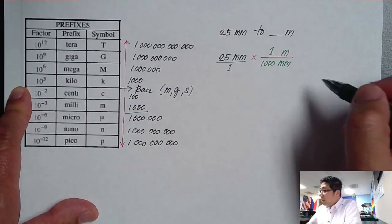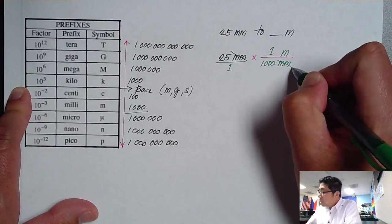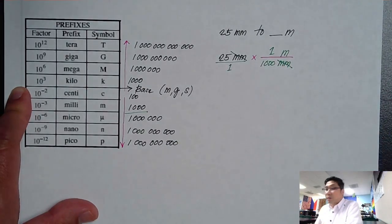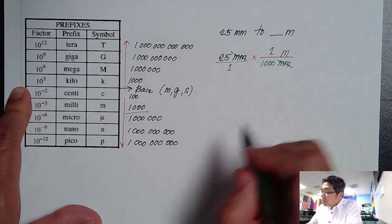25 divided by 1000. So if you notice, we can cancel our millimeter and meters by itself. So 25 divided by 1000.